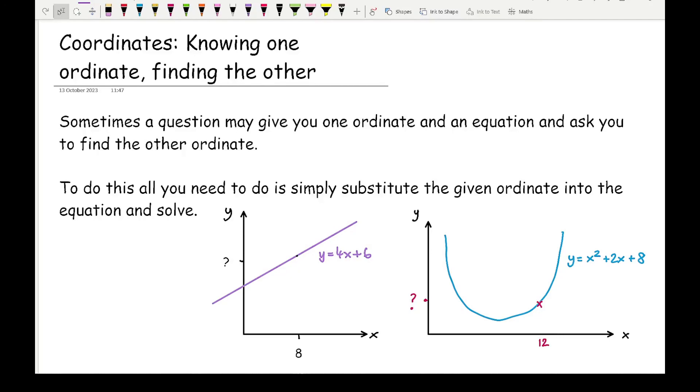Sometimes a question may give you one ordinate and an equation and ask you to find the other ordinate. To do this, all you need to do is simply substitute the given ordinate into the equation and solve.